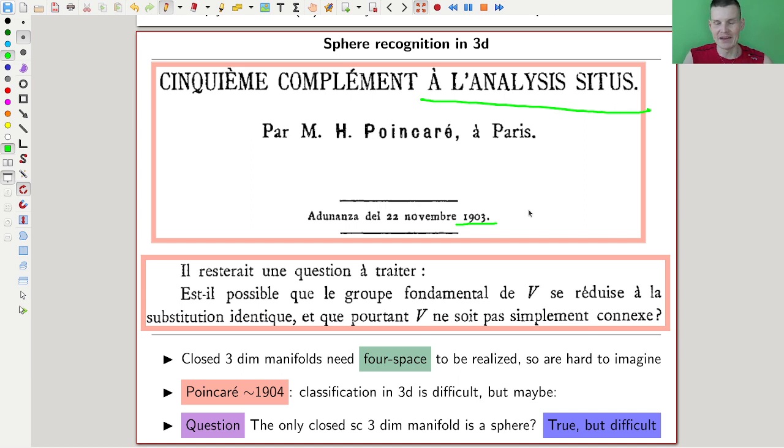It took a while to be proven—famously proven eventually, standing on the shoulders of giants, using a lot of work of other people, but then famously proven by Perelman about 20 years ago. When you're watching this in 2024, it took about 100 years to answer this question—not to prove the conjecture but to answer the question, because it wasn't a conjecture, it was a question.